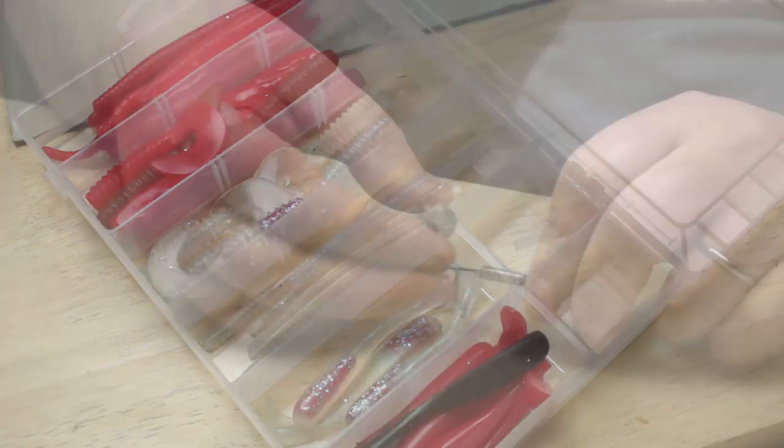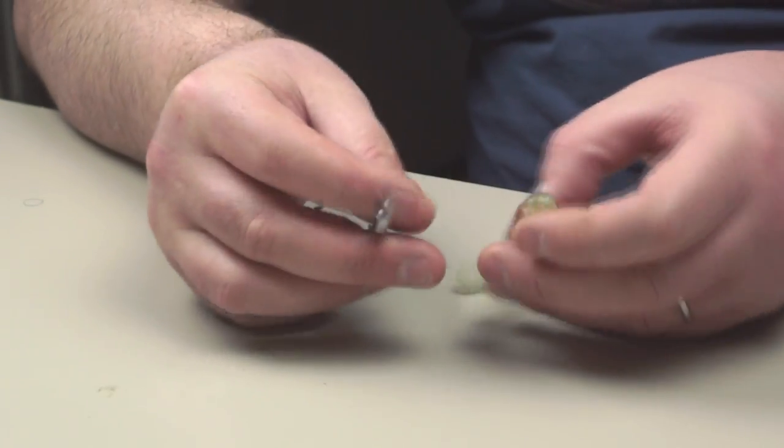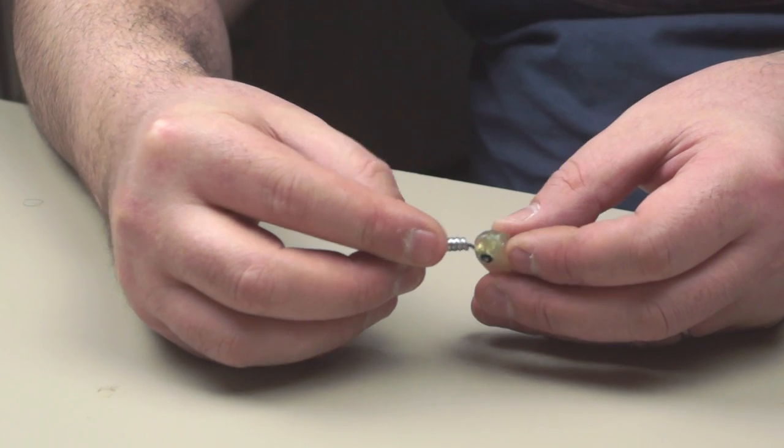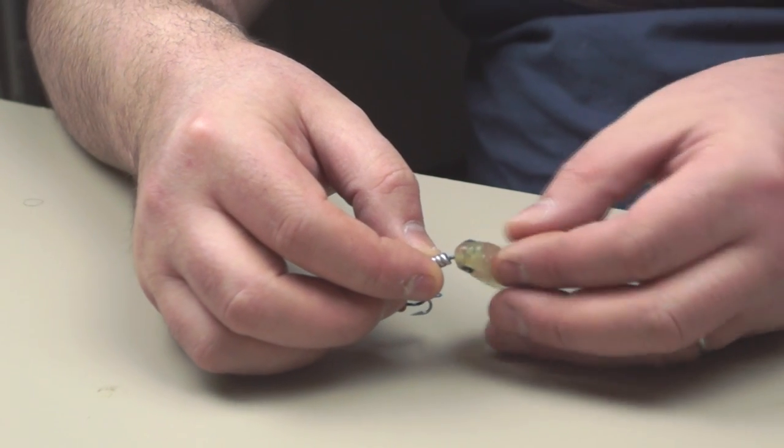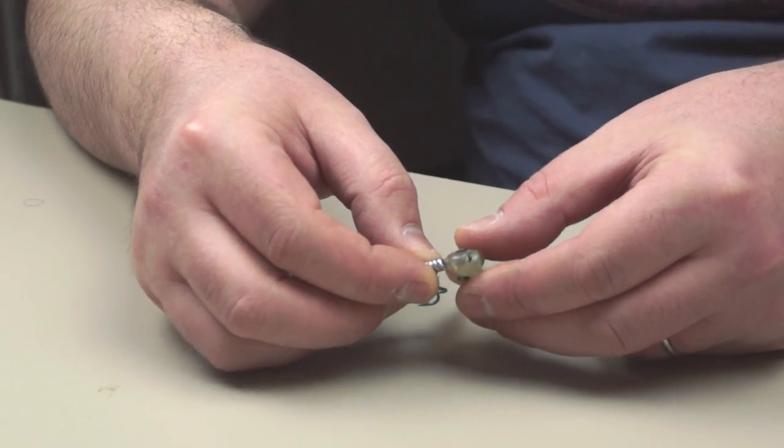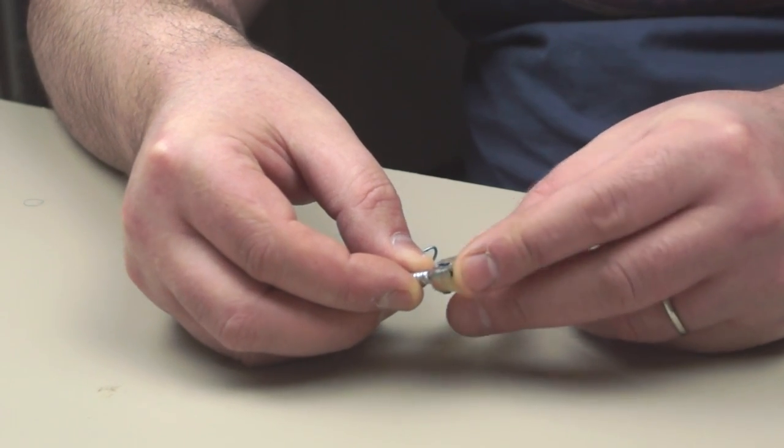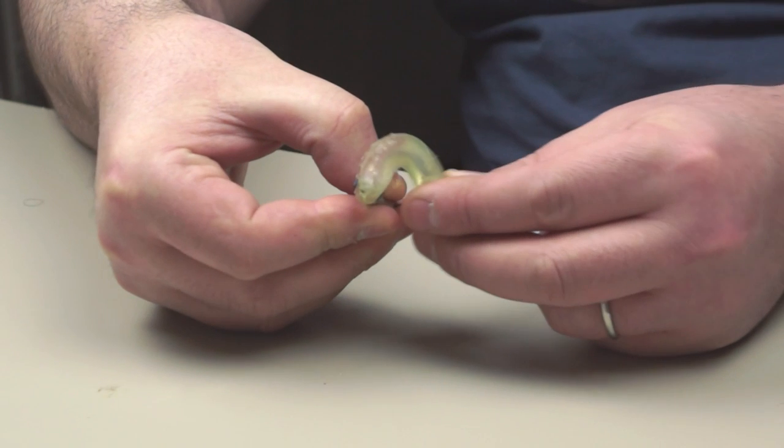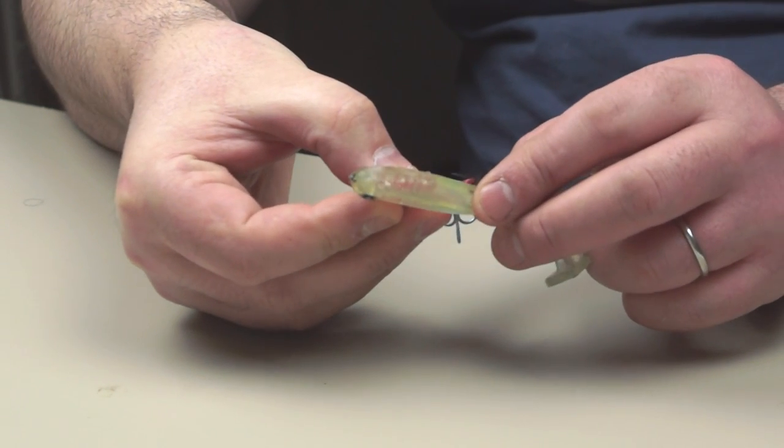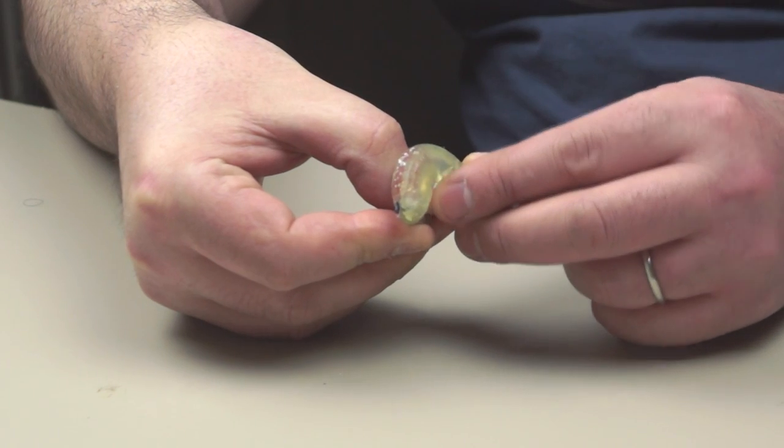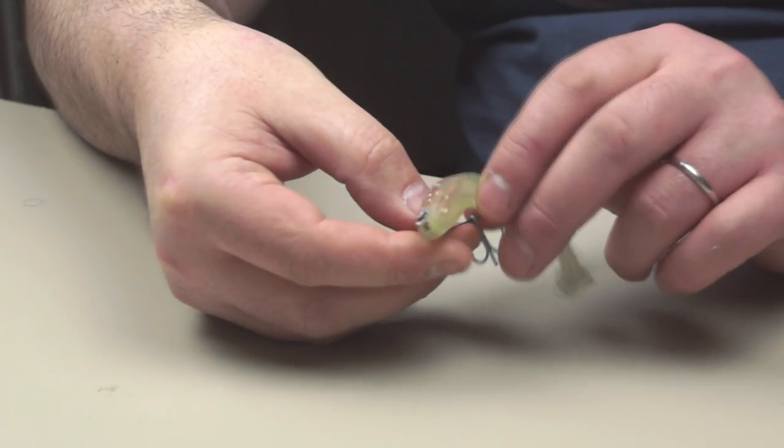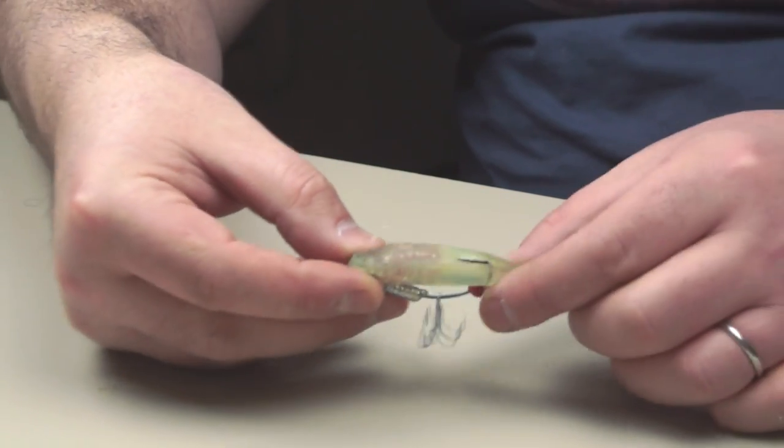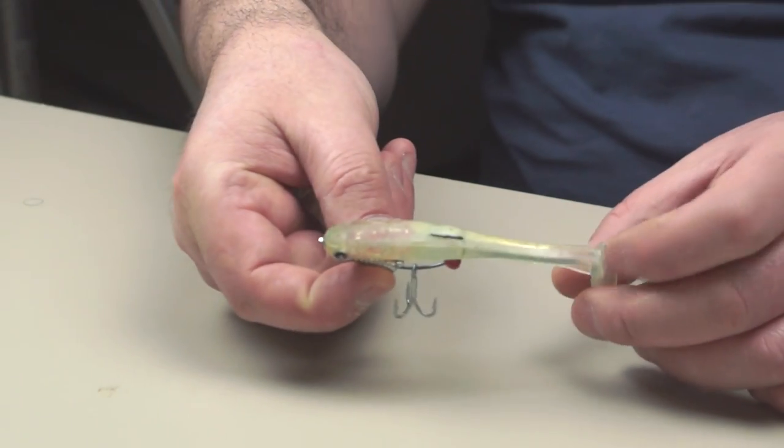To rig the paddle tail, I'm going to push through underneath the eye. This one's been rigged before actually so I'm cheating, but there it comes out the front. And then I'm going to measure along to where I want my hook to come out and push through from the underneath. And that should mean it sits nice and straight.